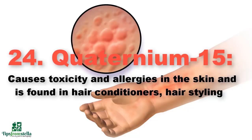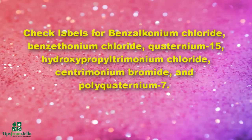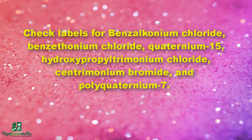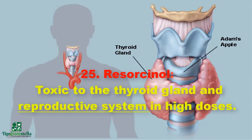Number twenty-four: quaternium-15. This causes toxicity and allergies in the skin and is found in hair conditioners, hair styling products, creams, lotions, cleansers, shaving products, eye drops, contact solutions, and household cleansing products. Check labels for benzalkonium chloride, benzethonium chloride, quaternium-15, hydroxypropyl trimonium chloride, cetrimonium bromide, and polyquaternium-7.